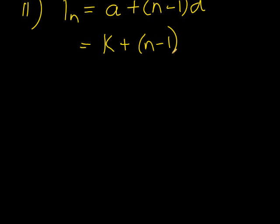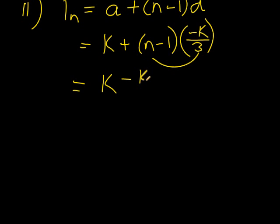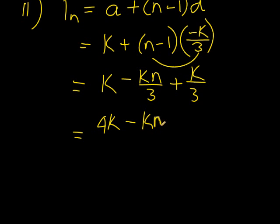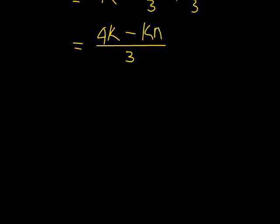We're going to keep n general, but d is negative k over 3. Now, this should be sufficient to leave it just like that, but I'm going to simplify, so I get k plus, actually k minus, because that negative k gets multiplied. Negative k times n over 3, and then negative and negative is plus k over 3. So I have 4k minus kn over 3. You can choose how you want to simplify it, or you didn't have to. Pause the video if you're not exactly sure what I did.